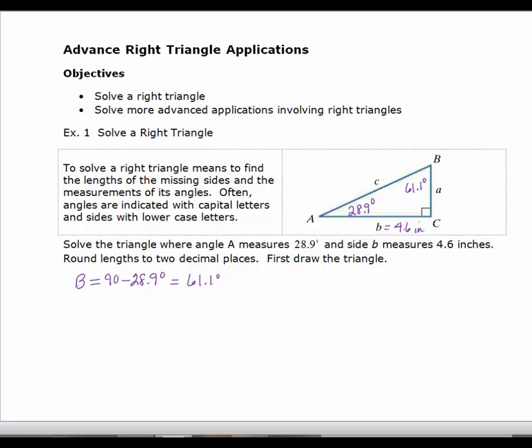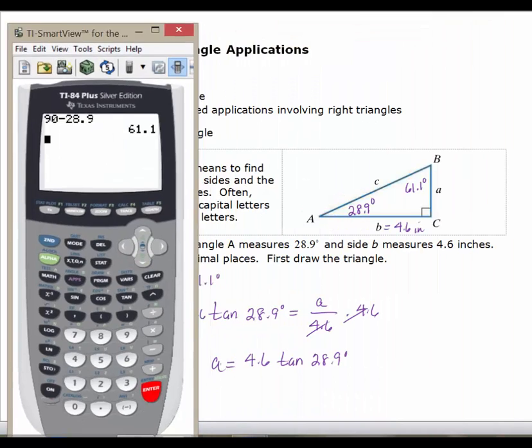So to find side A, what relationship would you set up if you had angle A and you had the side opposite and the side adjacent? We would be using tangent. The tangent of 28.9 degrees equals the opposite over the adjacent, so A over 4.6. Multiplying both sides by 4.6, I get A equals 4.6 times the tangent of 28.9 degrees.